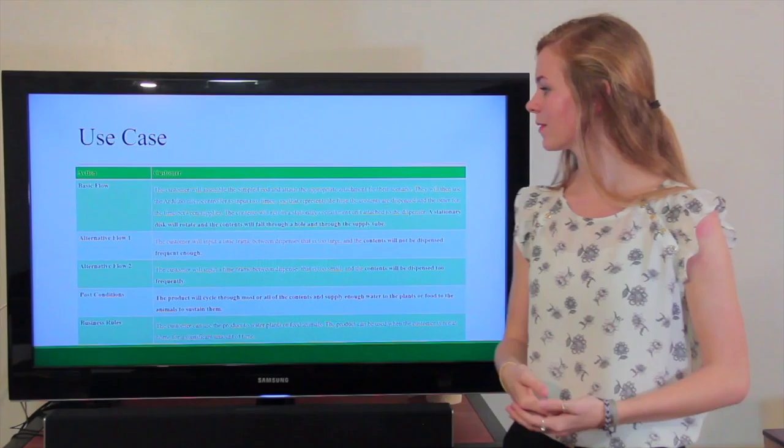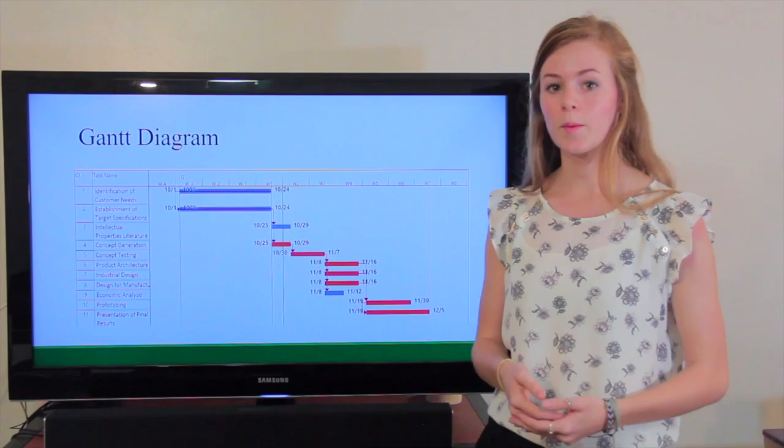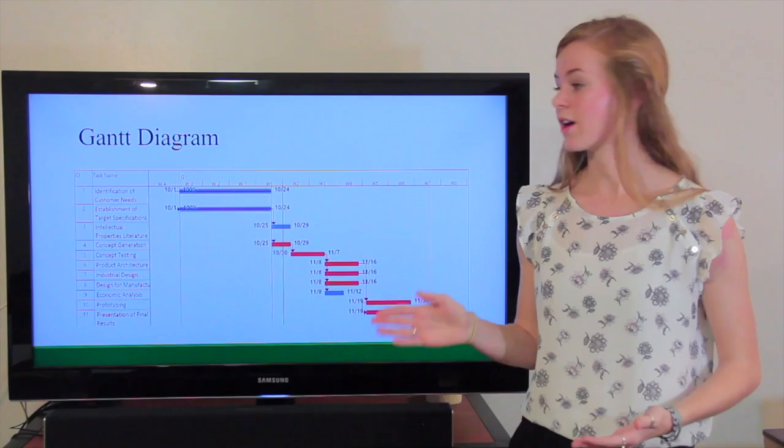The post conditions would be that the product will cycle through all of the materials and supply enough of the materials to these plants or animals, or anything else that the customer really needs.